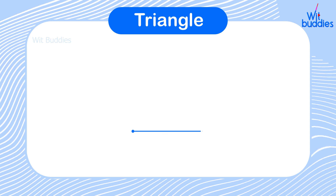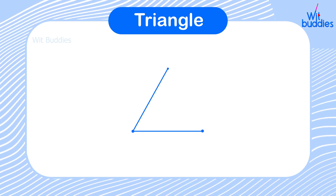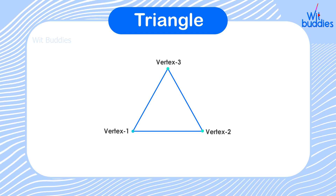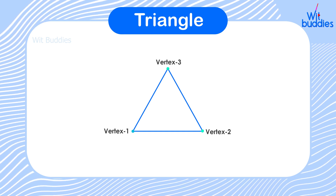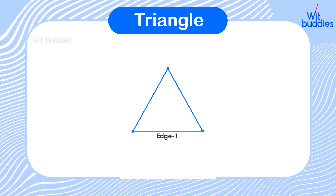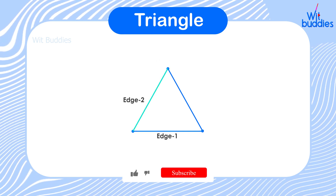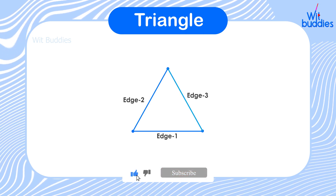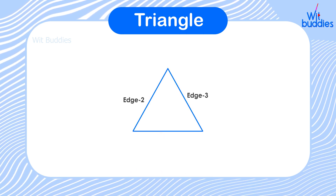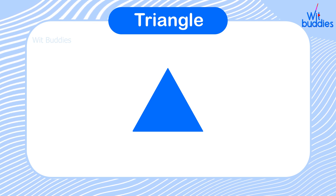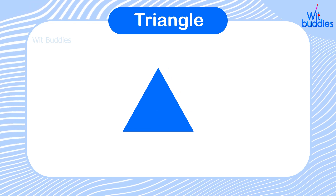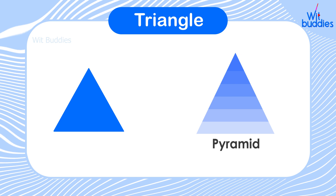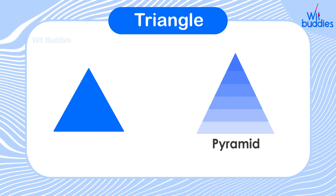Triangle: A triangle is a three-sided polygon, a 2D shape which has three edges and three vertices. The sum of all the three angles of a triangle is equal to 180 degrees. Pyramids are the best example of a triangle shape.